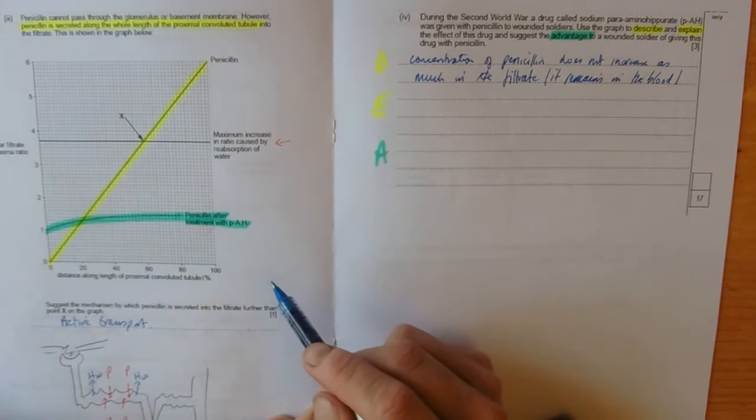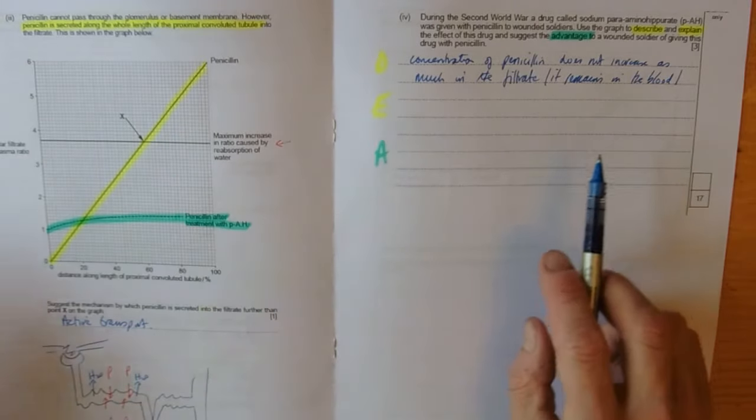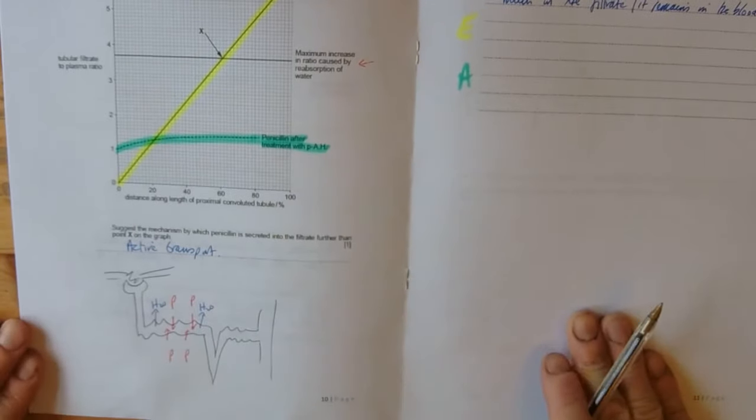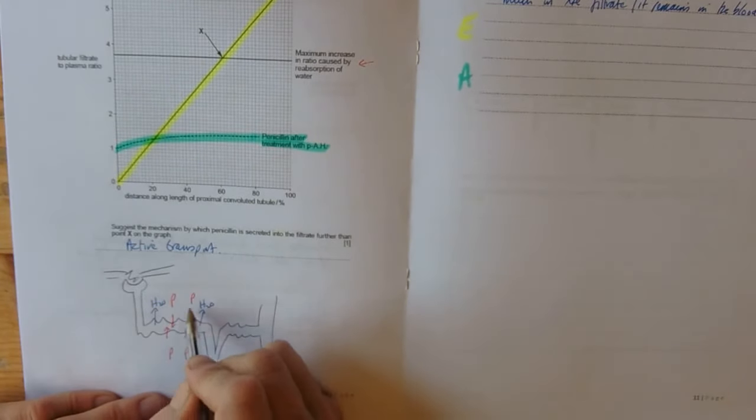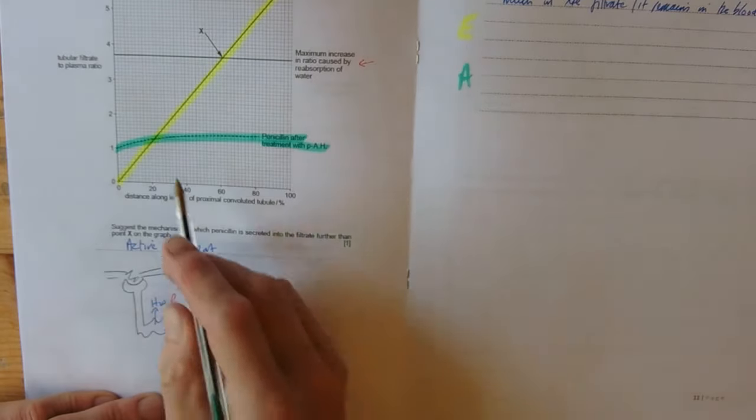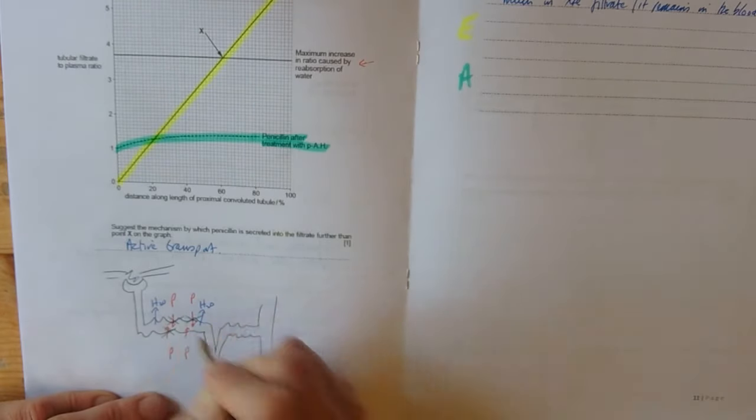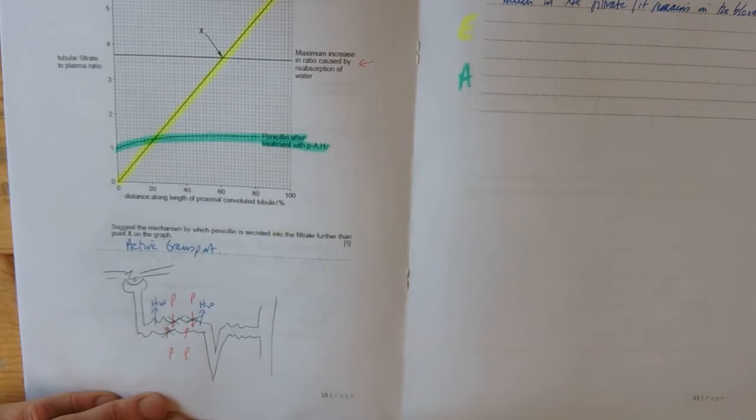Explain how this happens. Well, my handy little diagram here. Penicillin has been actively transported by the cells of the proximal convoluted tubule into the tubule, into the filtrate. Well, what does the drug do? What can we suggest?